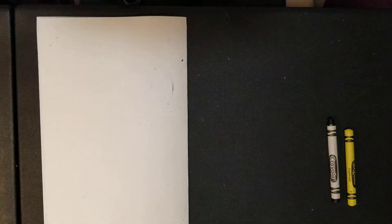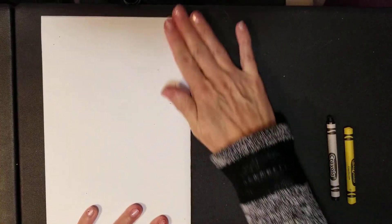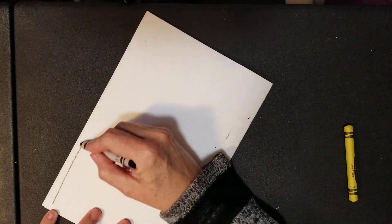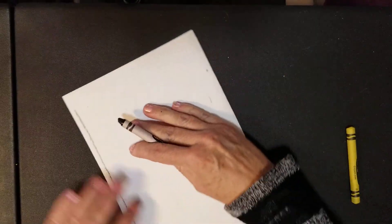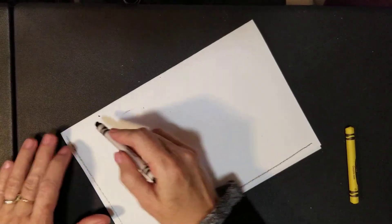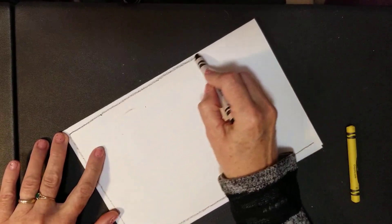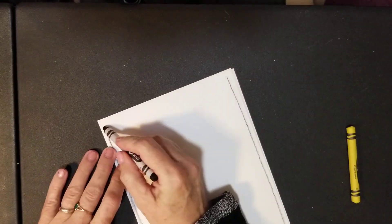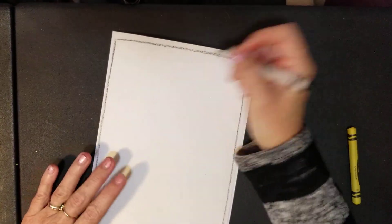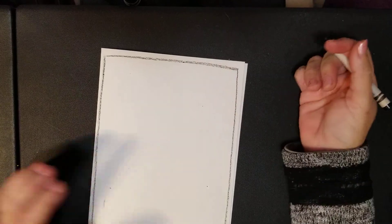Once you fold your paper, make a little outline around the outside very close to the edge. That's just to keep you from coloring all over your table. I'm making a basic outline that reminds me not to color all the way to the edge because I'll be coloring really hard and don't want crayon all over the table.